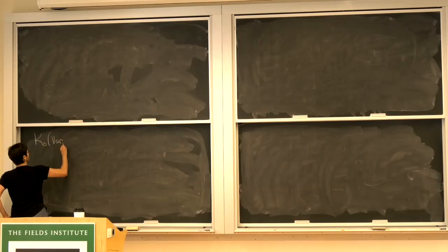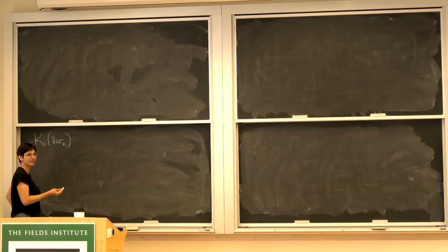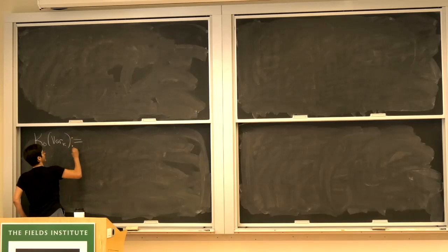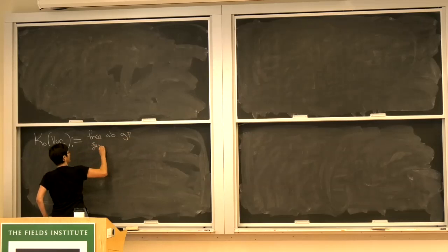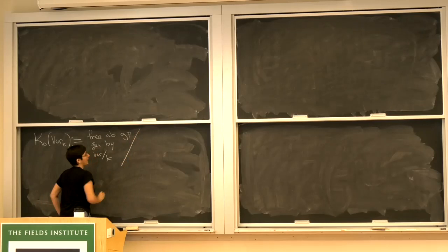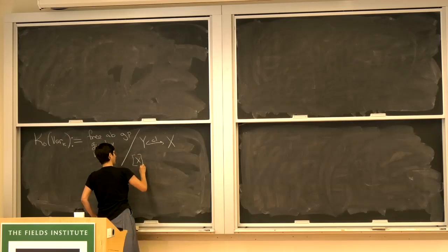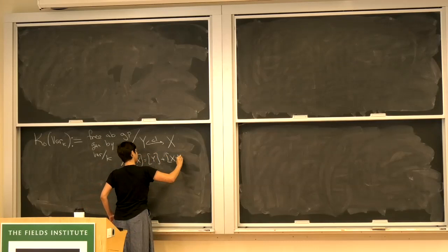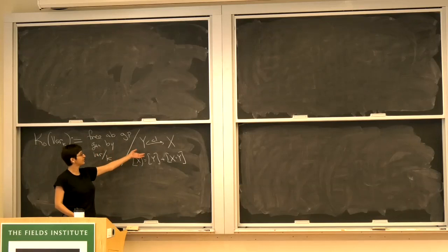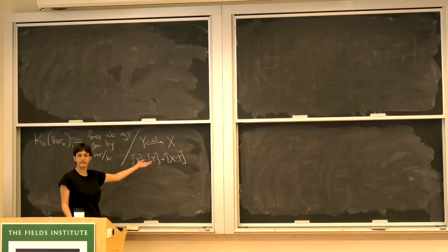The K-theory of varieties starts with K0 of varieties. So there's some base field K — you can do this over a base scheme, but I'll just have a base field. This is defined to be the free abelian group generated by varieties over K. We're going to have one relation: if you have a closed immersion from Y into X, then X equals Y plus the complement. From this relation, you can get that if two varieties are isomorphic, they're equal in this group.